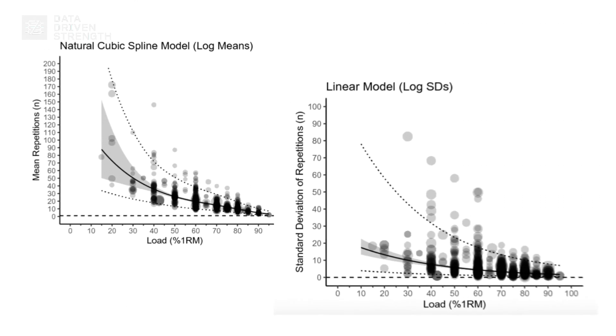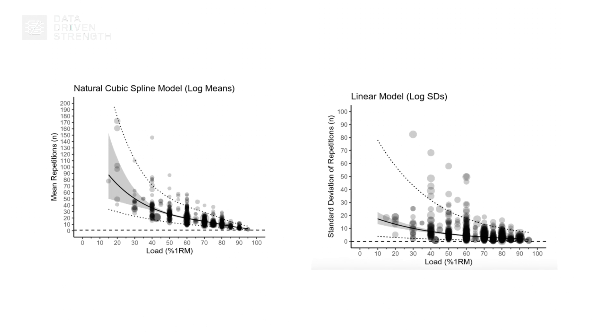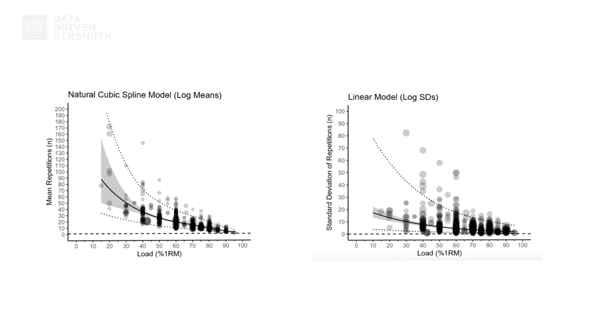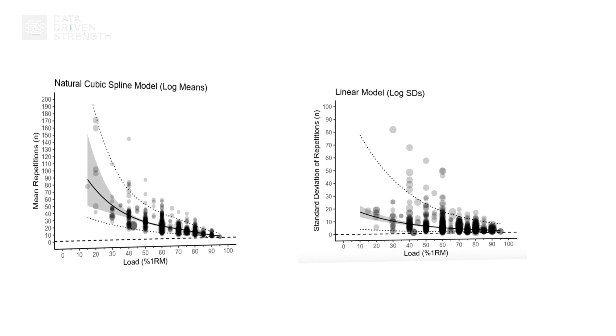Overall, the authors reported tight estimates in the range of 50–100% of 1RM, but less so at lower loads. The relationship didn't seem to be dependent on sex, age, or training status. However, exercise selection seemed to play a role, with more repetitions being performed in the leg press and fewer in the bench press than other exercises. All in all, this model is the most robust tool we've ever had access to, though there are still some limitations worth considering when looking to apply this to training.